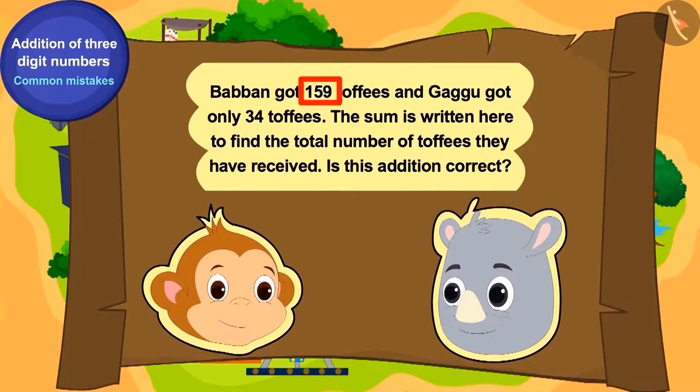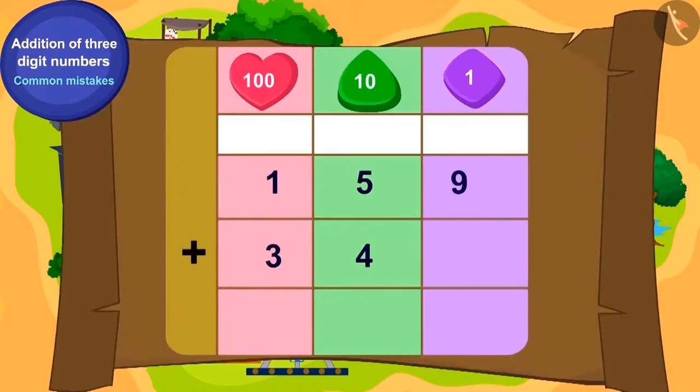This is Bablu's second puzzle. Babban got 159 toffees and Gaggu got only 34 toffees. The sum is written here to find the total number of toffees they have received. Is this addition correct? If not, write the correct sum and reach your last location.